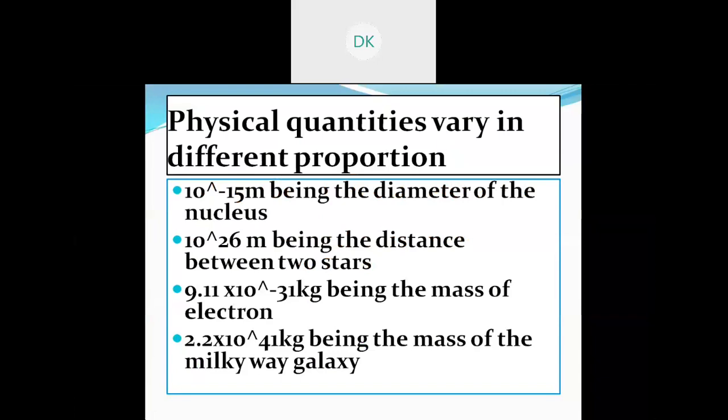9.11 to 10 power minus 31 kilogram being the mass of electron. Inside the nucleus there is a part of electron, proton, neutron. The electron mass is 9.11 into 10 to the power minus 31. 2.2 into 10 to the power 41 kilogram being the mass of Milky Way galaxy. All these unit prefixes are representing the value with the positive and negative, showing whether it is large distance or small distance.